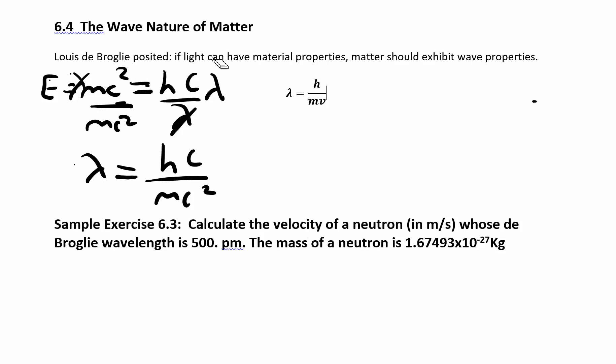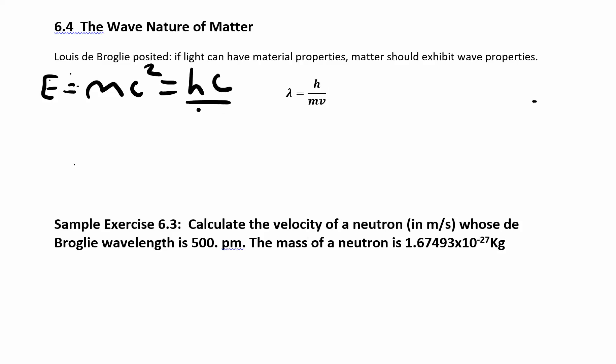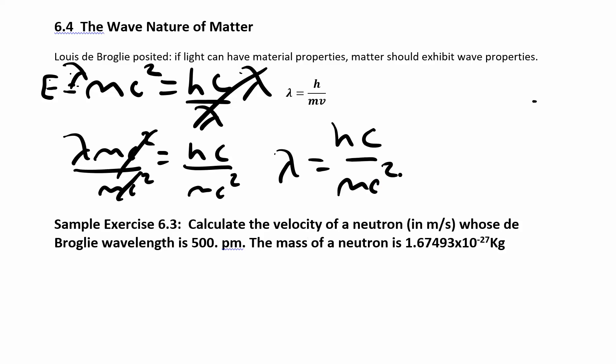Let me go back to the original equation. I have energy equals mc squared, or hc over lambda. If I multiply both sides by lambda, I get lambda times mc squared equals h times c. And now I'm going to divide by mc squared. I get lambda is equal to hc over mc squared. One of these c's cancels with one of those c's. So I get h over m times c.